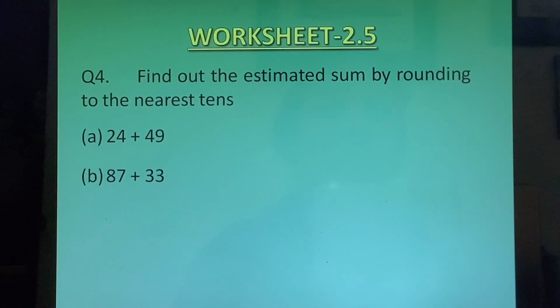Question 4 Find out the estimated sum by rounding off to the nearest tens. Here you don't have to find out the actual sum. You only have to find out the estimated sum. 24 plus 49 B. 87 plus 33. Question 5 Find out the estimated sum by rounding off to the nearest hundreds A. 232 plus 658 B. 389 plus 451